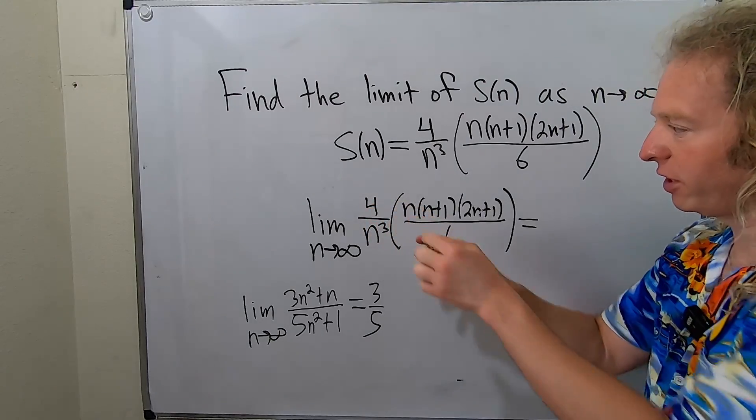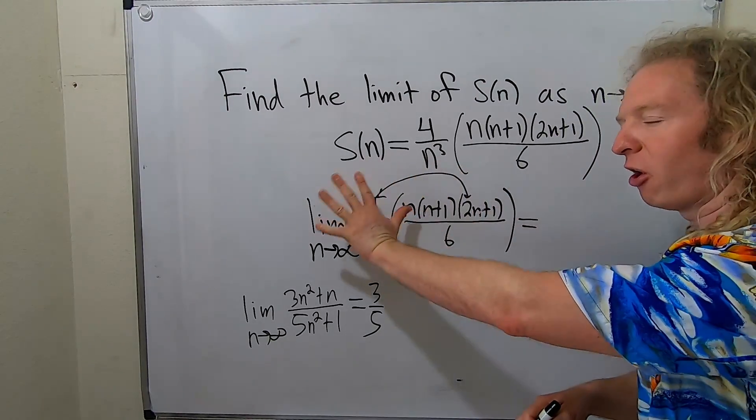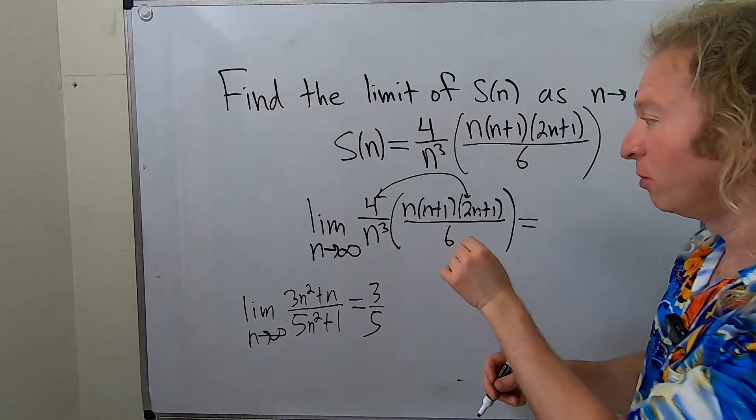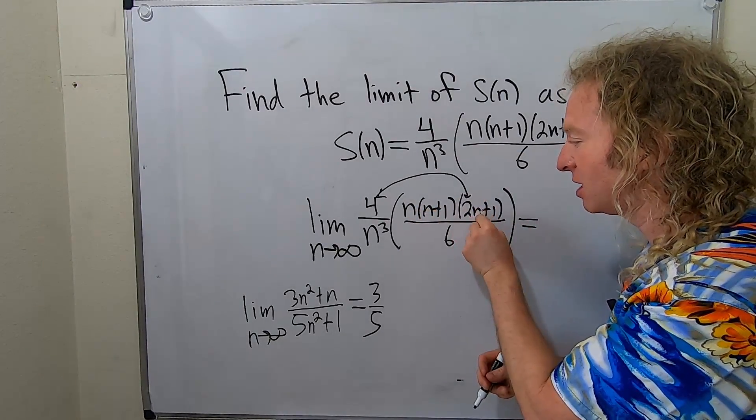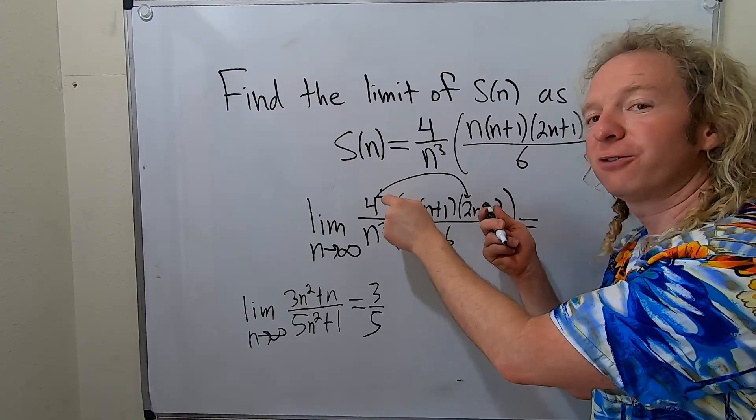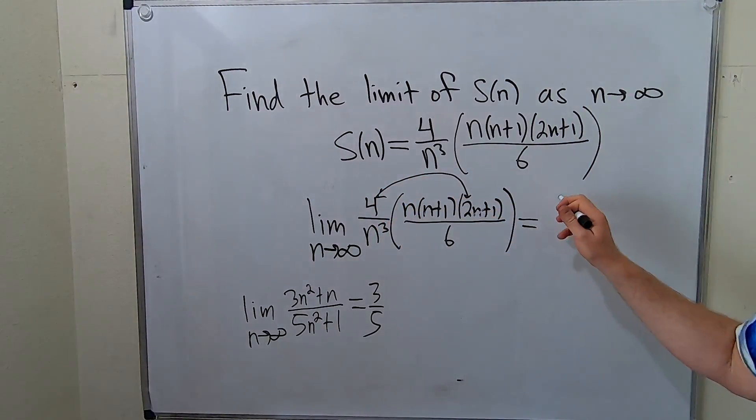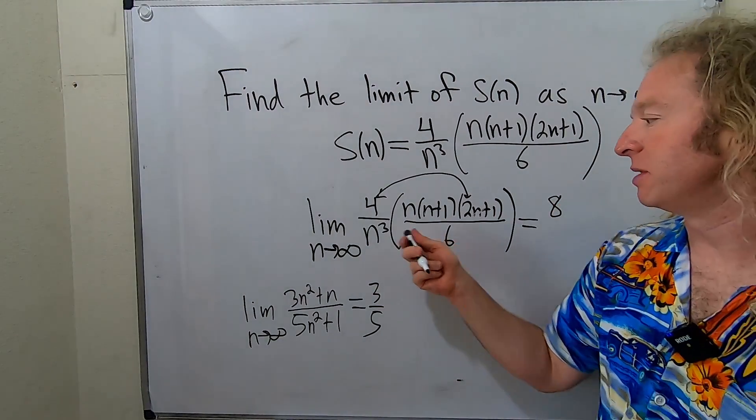You see, because we have the 4 here, and that's going to get multiplied by the 2. So if you were to multiply all of this out, your term of highest degree would be cubic, because n times n times n is n cubed. But then you would get 8n cubed. So the leading coefficient in the numerator is 8. And then on the bottom, it's simply 6.